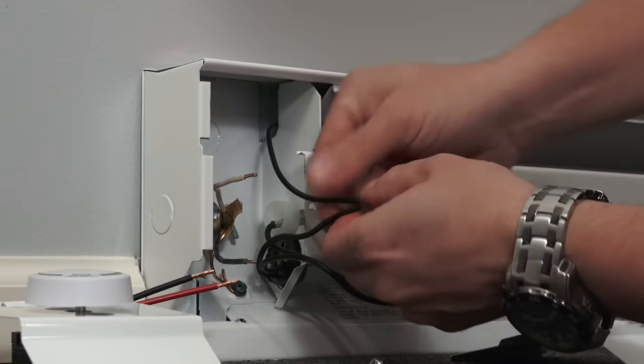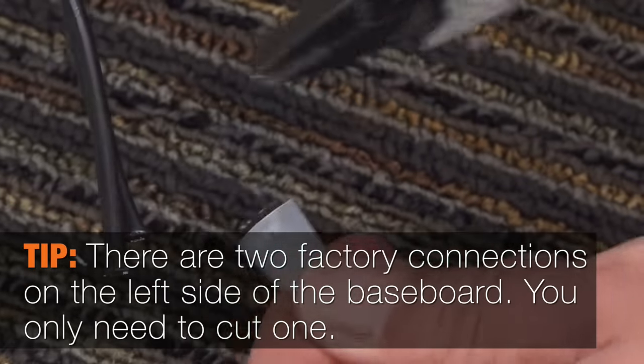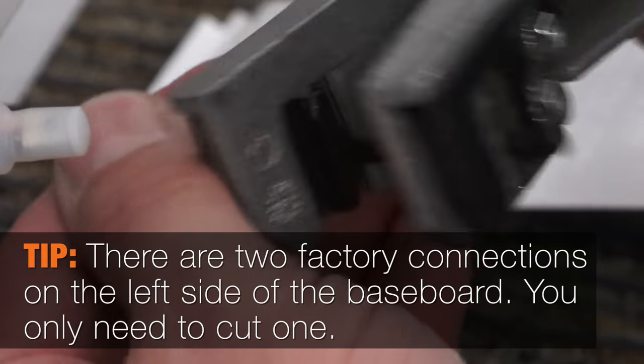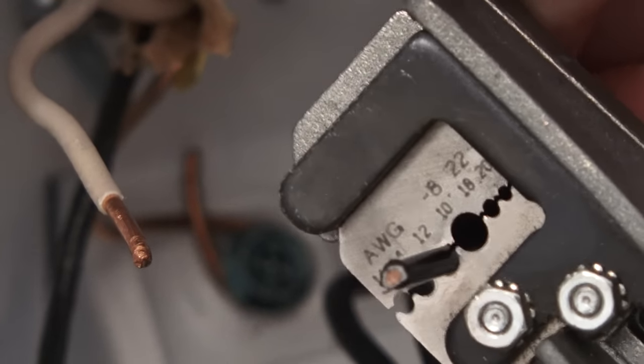So I guess with that, let's get started. First thing we're gonna do is disconnect the factory connection. Next thing that we're gonna do is strip the wires on the factory connection that we just disconnected, and you're gonna want to strip it at about a half inch.